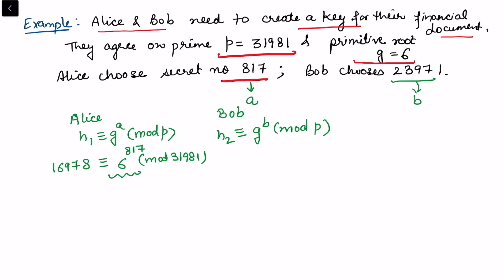On the other side, h2 is calculated as 28349, which is congruent to 6 to the exponent 23971 with respect to mod 31981. Now these two are exchanged – h1 goes to Bob and h2 comes to Alice.